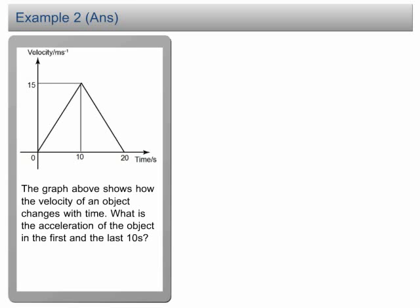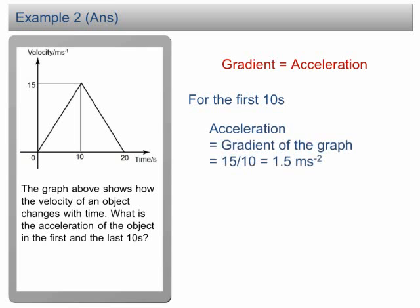In the velocity-time graph, the acceleration is equal to the gradient of the graph. From 0 seconds to 10 seconds, the gradient is equal to 15 over 10, equal to 1.5. Therefore, the acceleration for the first 10 seconds is 1.5 meters per second squared.